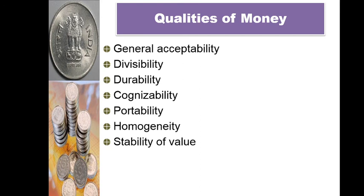Money enables you to compare the price of commodities — for example, different brands of toothpaste with different prices in terms of money, which you can easily compare. Money must possess measure of value to exchange goods and services, and these goods can be sold and purchased in future as per requirement in terms of money only. The value of money must be stable — that is the stability of value of money.